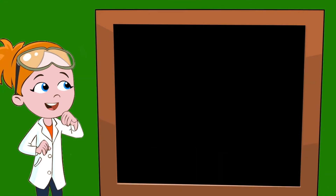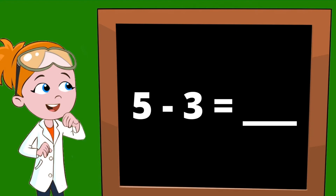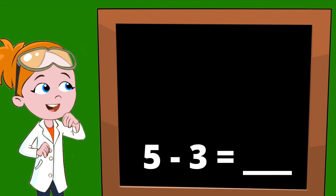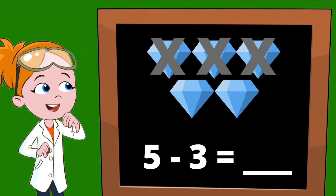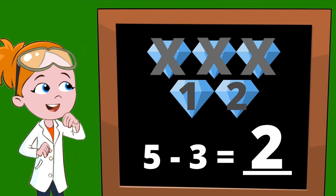Let's try another one. How about 5 minus 3? Let's use diamonds this time. According to our equation, we start with 5 diamonds. Now, we need to subtract 3 of those diamonds, so let's put an X through 3 of the diamonds. 1, 2, 3. Perfect. Now we can count to find out how many diamonds are left. 1, 2. Our answer is 2. There are 2 diamonds left. So 5 minus 3 equals 2.